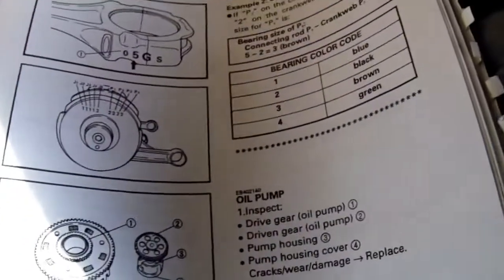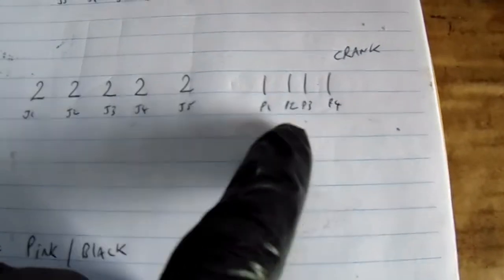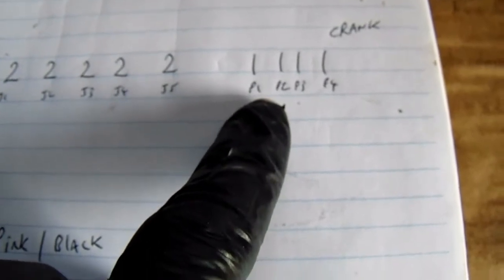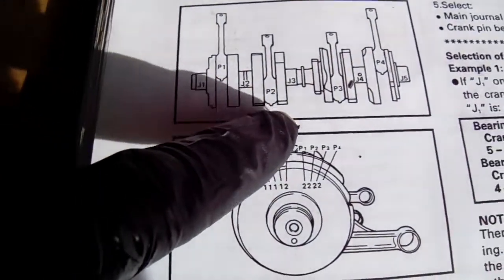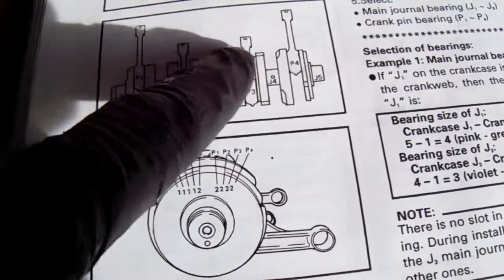Now, the other numbers on the crank, the 1111 is for the pistons. As you can see there look, we've got P1, P2, P3 and P4.